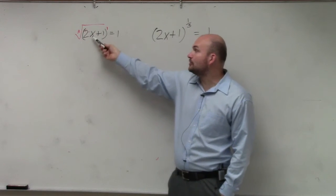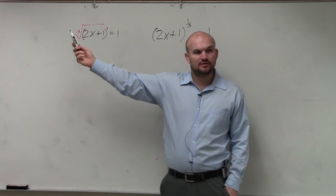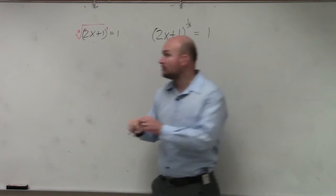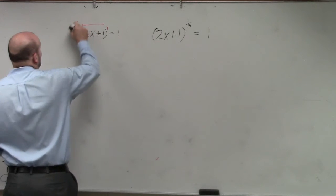So if I had the cube root of an expression, how would I undo the cube root? You do what? Raise it to the third power.